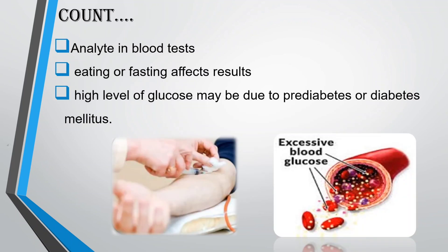Glucose is an analyte in blood tests. Eating or fasting affects results; a high level of glucose may be due to prediabetes or diabetes mellitus.